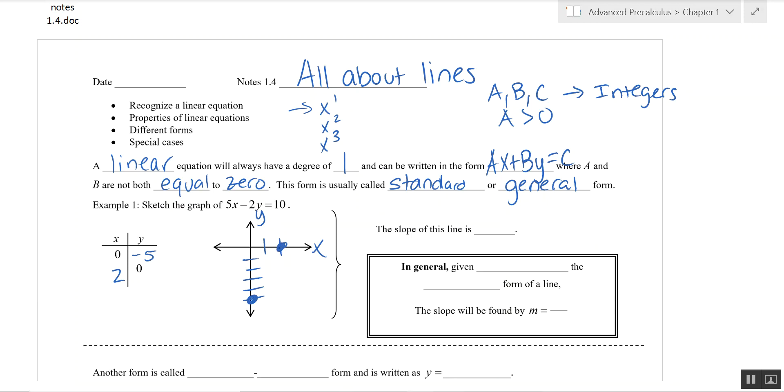We plotted both of those intercepts there. Let's label that. There's 2, there's negative 5. And the line that goes through both of those points, that is our equation: 5x minus 2y equals 10. Slope of this line, clearly if you just look at the graph, you can see it goes up 5 over 2 or 5 halves. Rise over run.